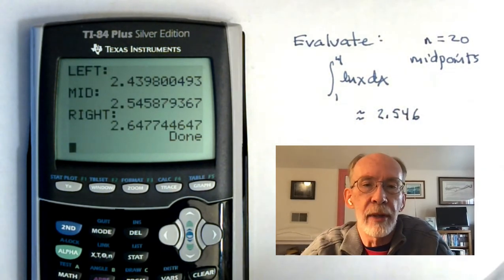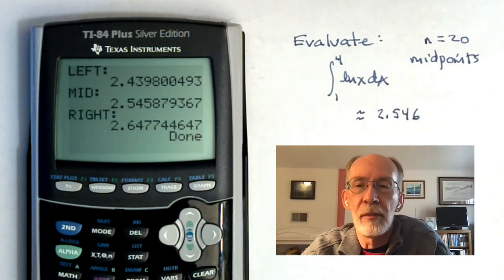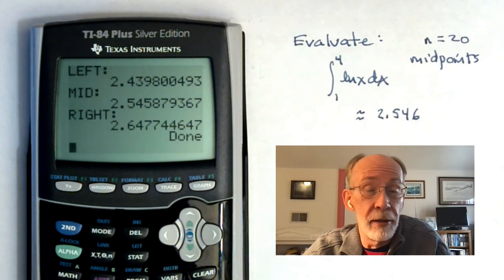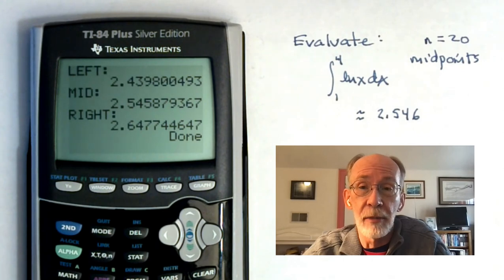It's worth noting that these do increase from the left to the midpoint to the right. And that should be unsurprising given that our integrand is an increasing function. So, if you take the leftmost value on a subinterval, you're going to get the least possible value for each subinterval. And the rightmost, you're going to get the greatest. And anything in between, you're going to get something in between.